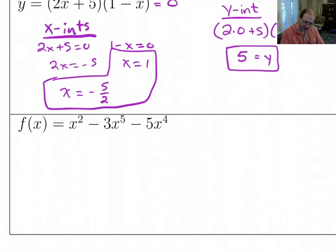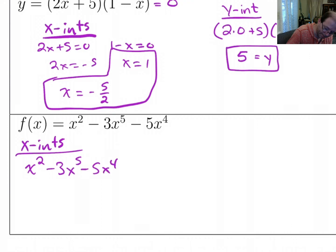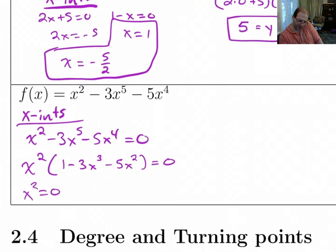Alright, let's do this next one now. x² - 3x⁵ - 5x⁴. Okay, I can factor at least some of this. I can factor out, well, for the x-intercepts. I can factor out an x², and I'm left with 1 - 2x, or no, 1 - 3x³ - 5x² = 0. Alright, so that gives me x equals, x² = 0. That's easy to solve. That gives me x = 0.